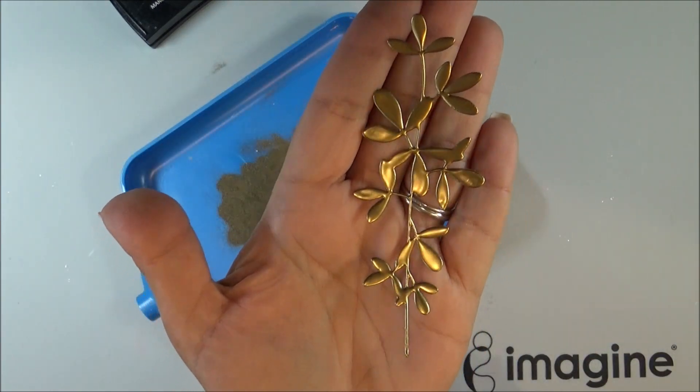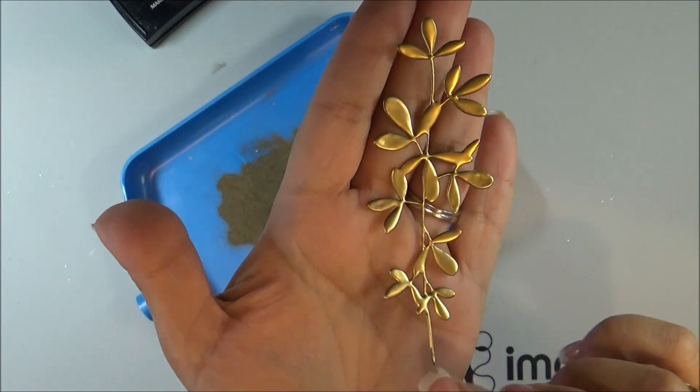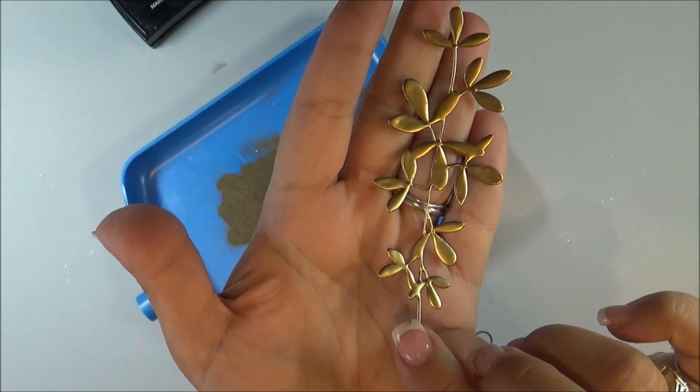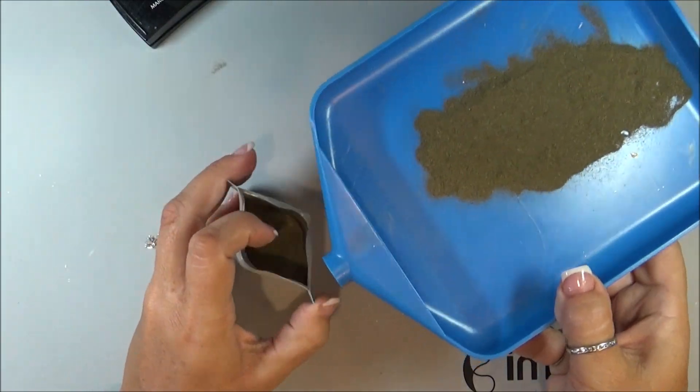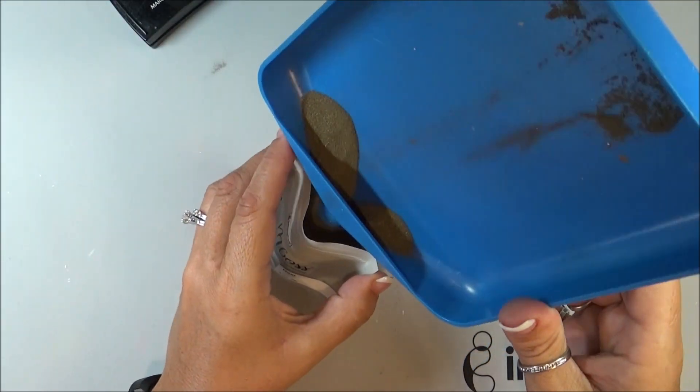So I embossed it three times in the gold, so you can see it gets more of a thick metallic look, and then the extra that I have in my tray, I just pour right back into the bag.